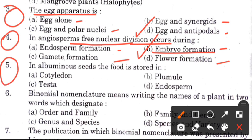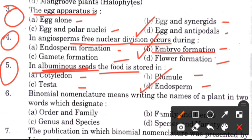Question 5: In albuminous seeds, where is the food stored? Options are: cotyledon, plumule, testa, and endosperm. The answer is D, which is endosperm.